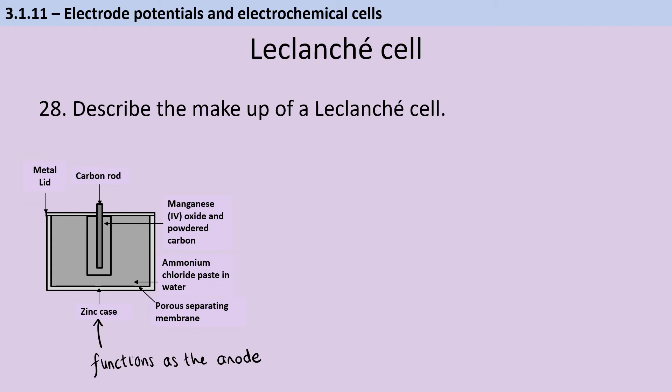Then your cathode is going to be this carbon rod, which is submerged in this inner chamber containing manganese oxide and powdered carbon. And then between the zinc case and that cathode, you've got the ammonium chloride paste in water, which is the electrolyte. Now, over time, that is going to cause hydrogen to form and that hydrogen is going to be immediately oxidized by the manganese oxide in order to make water. And that's why this battery is not rechargeable because you can't just go straight back to having ammonium ions because the hydrogen has already been used up in another chemical reaction.